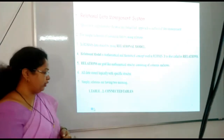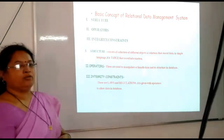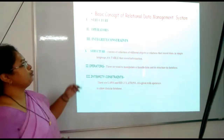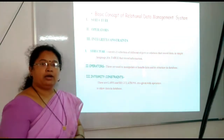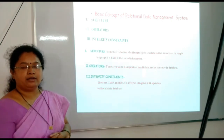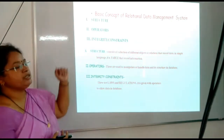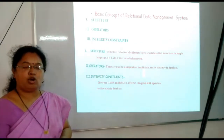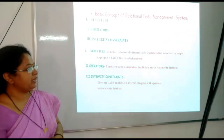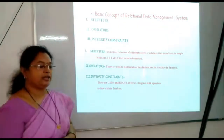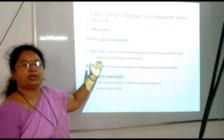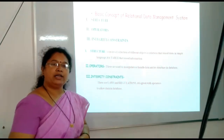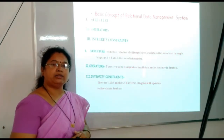Next, we see the basic concepts of relational database management system. By using these three points, we can manage our data in a database management system. The first point is structure. Structure consists of a collection of different objects or different relations that store our data within that database. In simple language, structure means table — structure is nothing but a table or relation which stores our data in that database.